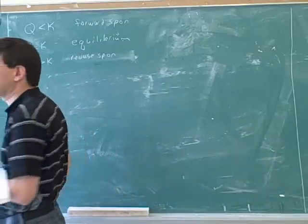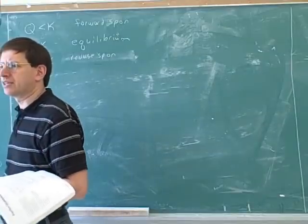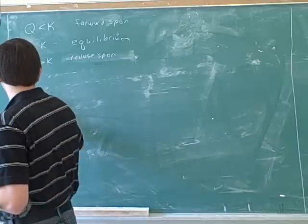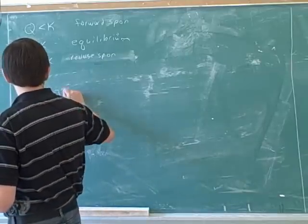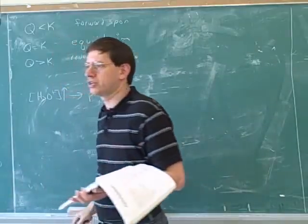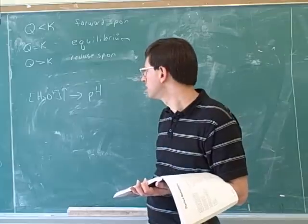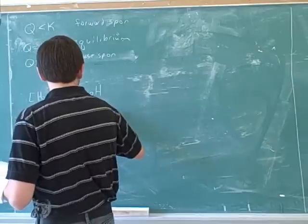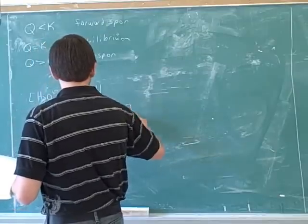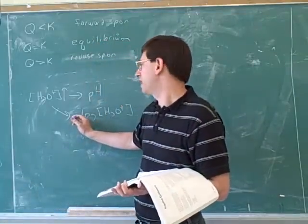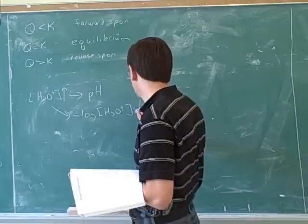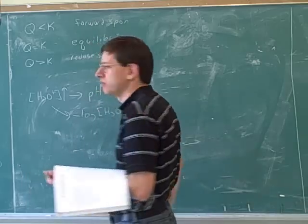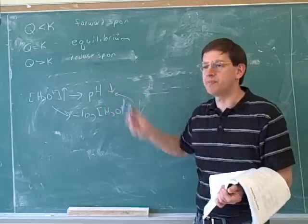Let's briefly review the concept of pH. How do you calculate pH? It's the negative log of the concentration of hydrogen — hydronium. If there's more hydronium, does that increase or decrease the pH? It decreases pH. Because of the negative sign, if we have more hydronium, we have a smaller negative log, which means a smaller pH. There's an inverse relationship between H⁺ concentration and pH.